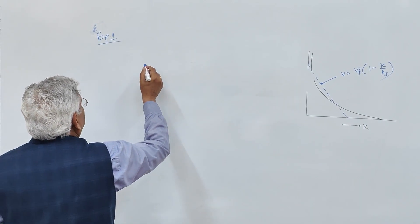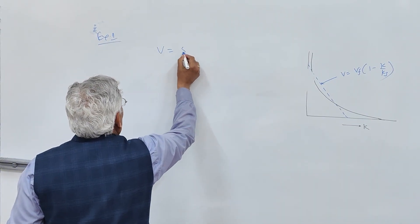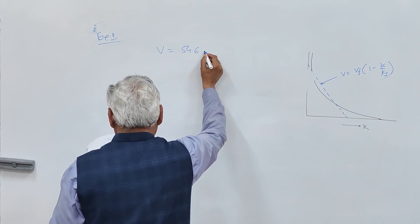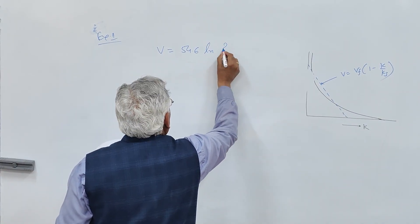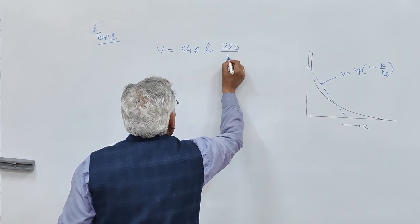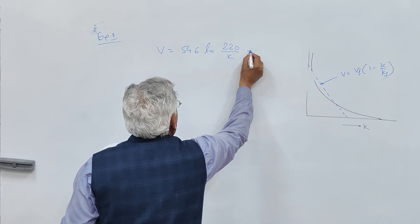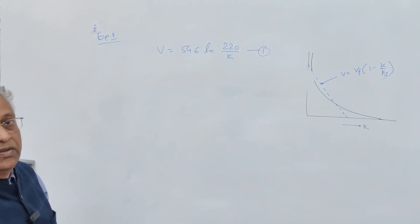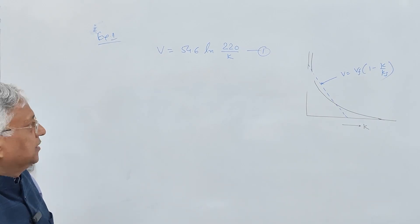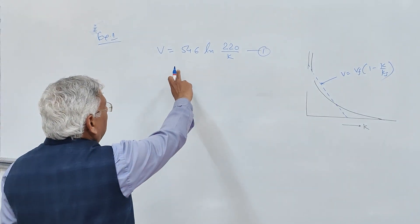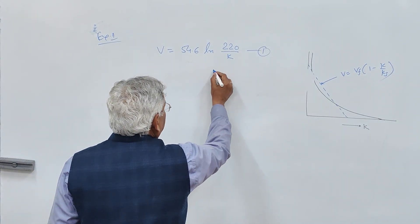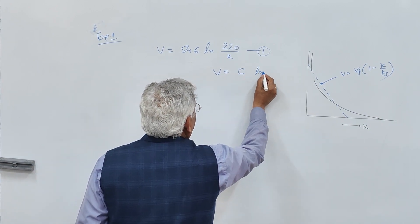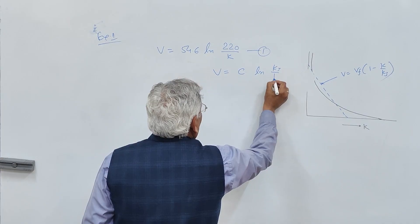Example 1: The speed-flow relationship on a section of highway is given by v equals 54.6 times ln(220/k). This is the speed-density relationship on the highway. Comparing with the Greenberg model v equals c times ln(kj/k), we can identify the parameters.